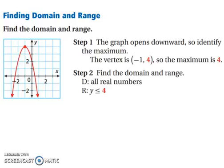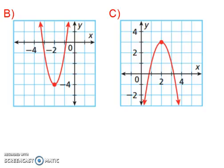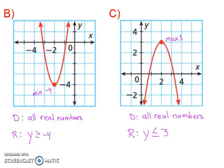Finding domain and range. The graph opens downward, so identify the maximum. The maximum here is at negative 1, 4, so the maximum is 4. The domain, when dealing with a quadratic, is always all real numbers. The range is y is less than or equal to 4, because you have a maximum and the rest of your graph is below that 4. This concludes our lesson on identifying quadratic functions.